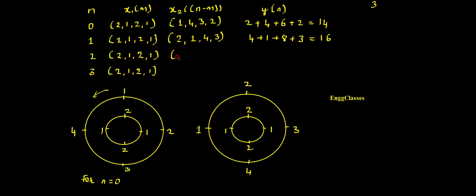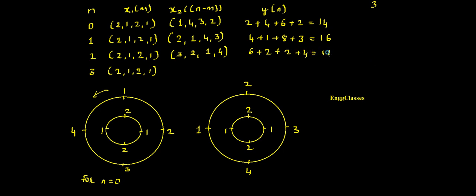Moving further, for n=2 we need x2(2-m). Starting from x2(1-m), I shift one more time, so 3 comes to the beginning and all samples shift right by one position, giving x2(2-m) = {3, 2, 1, 4}. Multiplying and adding: 2×3=6, 1×2=2, 2×1=2, 1×4=4. Summing gives y(2) = 14.